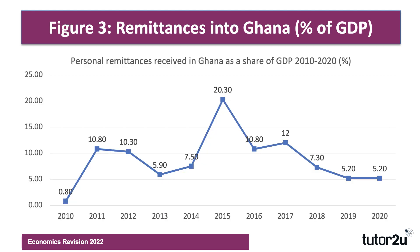Looking at the data — figure three — it shows remittances as a share of GDP. They peaked in 2015 at 20%, though the reason for that spike is unclear. They have been declining in recent times; the last couple of years have been about 5% of GDP, but that is still pretty substantial.